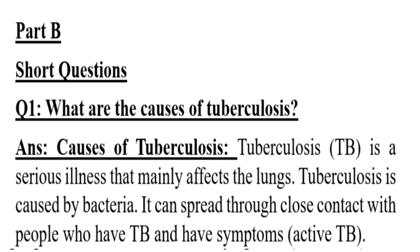Part B Short questions, Question number 1: What are the causes of tuberculosis? Answer: Tuberculosis is a serious illness that mainly affects the lungs. Tuberculosis is caused by bacteria. It can spread through close contact with people who have TB and have symptoms of active TB.